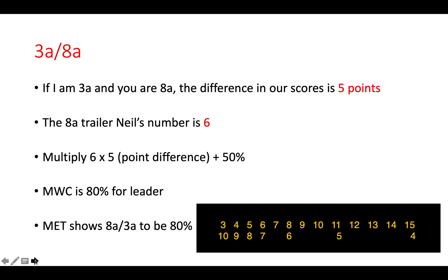Let's say the score is three away, eight away. First, we work out the difference — the difference between three and eight is five points. Then I find the corresponding Neil's number for the trailer. The trailer has eight points away, so we look at the first row, and underneath eight you will see a six, which is the Neil's number. We multiply the difference in score by the Neil's number — six by five — and always add 50%. That tells us the match winning chances are 80% for the leader and 20% for the trailer.